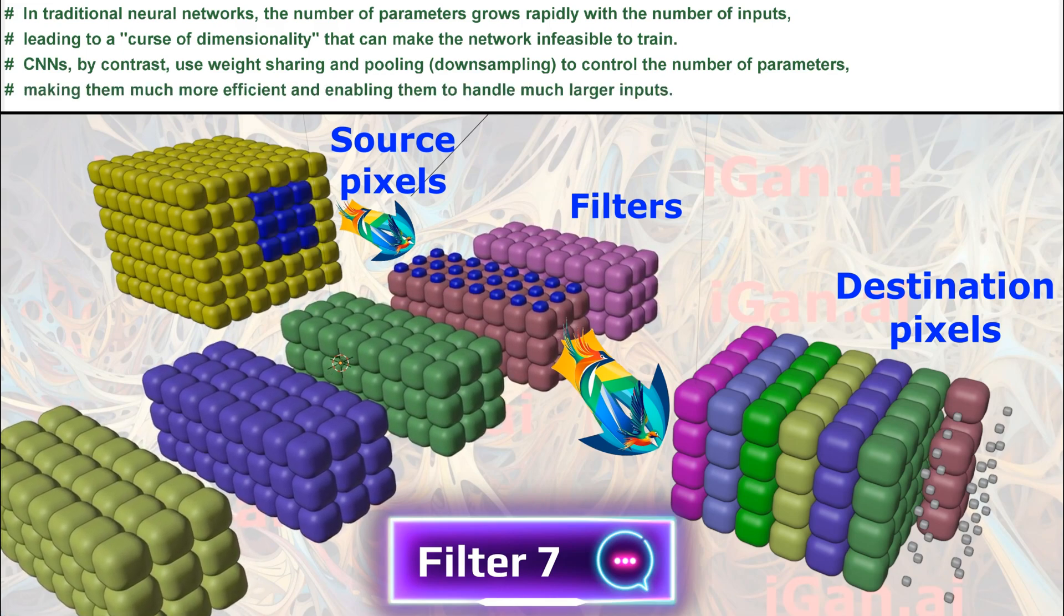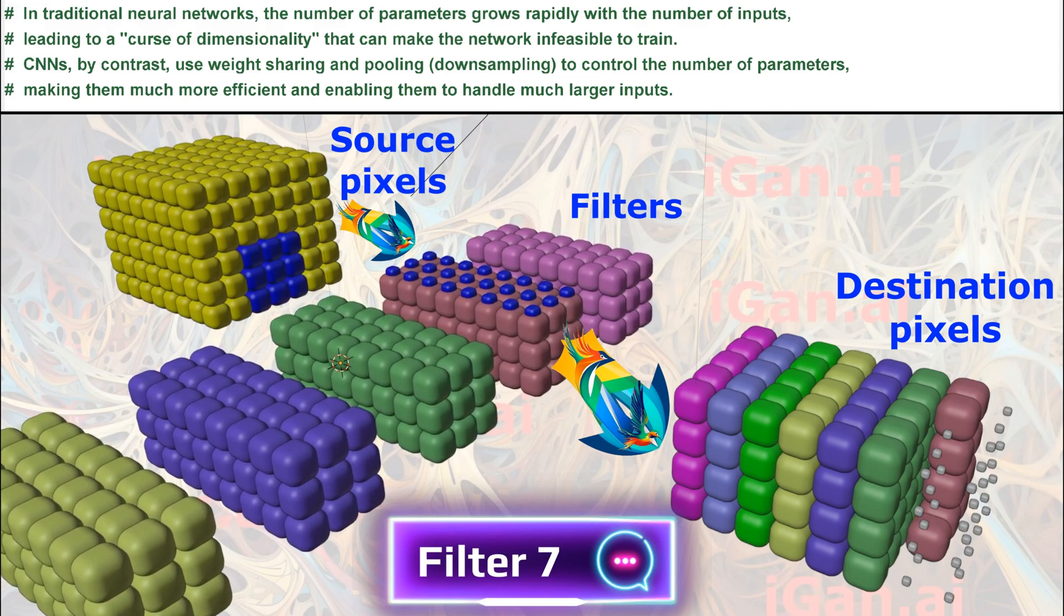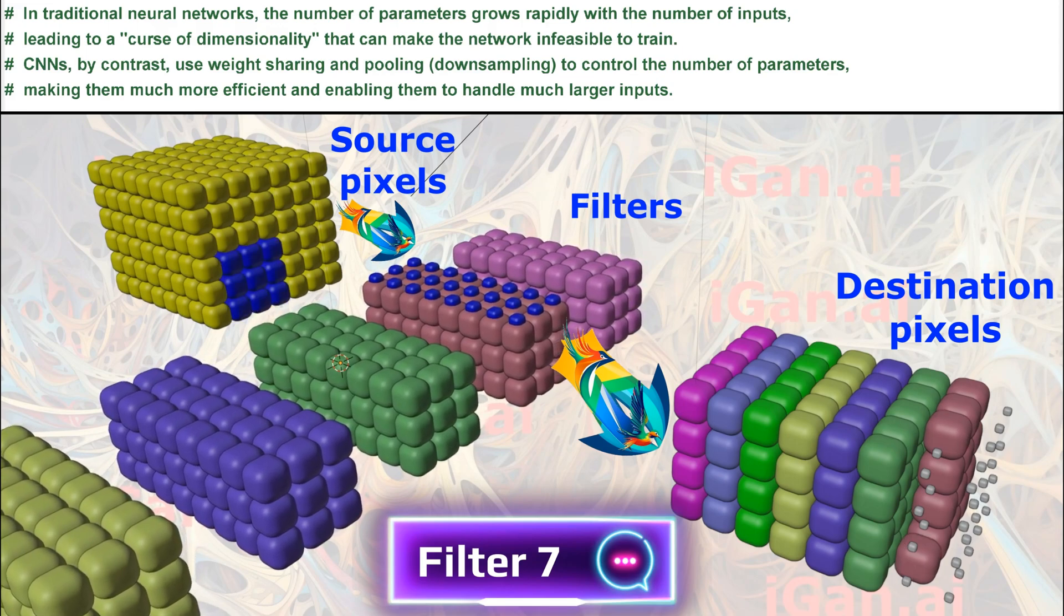CNNs, by contrast, use weight-sharing and pooling (downsampling) to control the number of parameters, making them much more efficient and enabling them to handle much larger inputs.